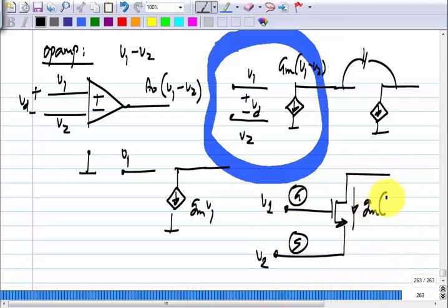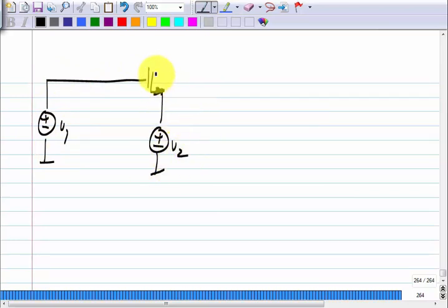What should I do to get gm times V1 minus V2? This is correct, this will work. Let me just connect the drain to some ground, small signal ground. I am only talking about the incremental picture here. Assume that the transistor is biased in saturation somehow.